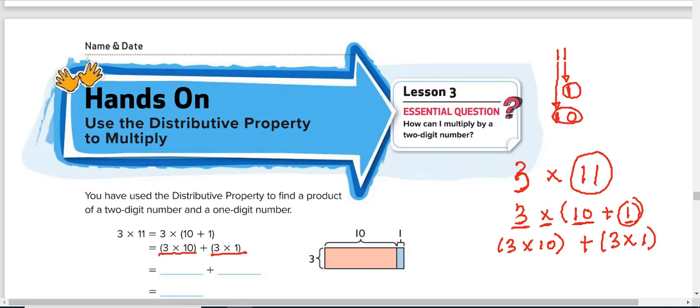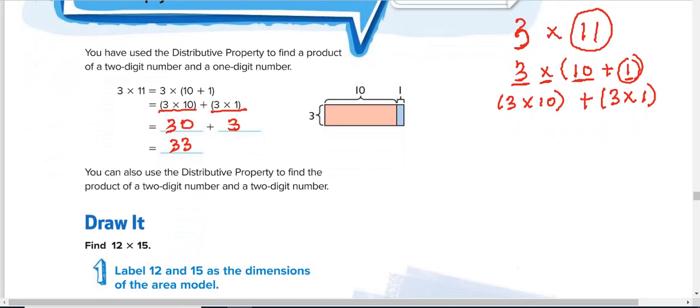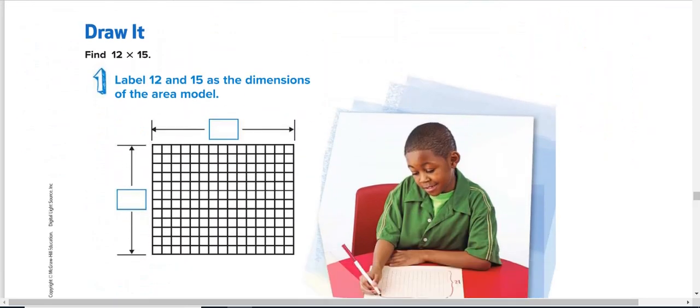Now you can multiply easily. 3 times 10, that's 30, and 3 times 1 is 3. Then 30 plus 3 will give you 33. So this is just an intro. But this time around, let's look at if the two numbers are two-digit numbers, then how do you multiply them? The same technique will still be used.